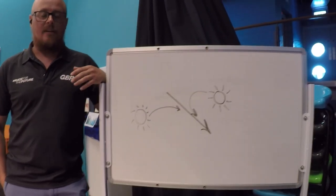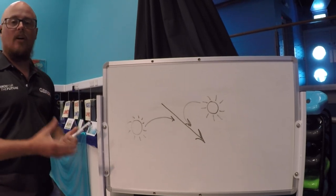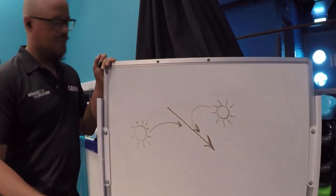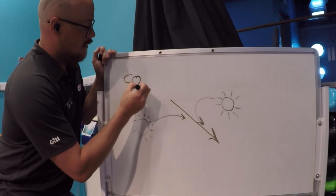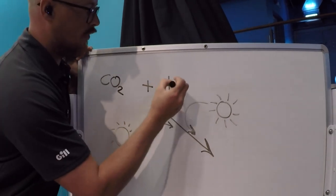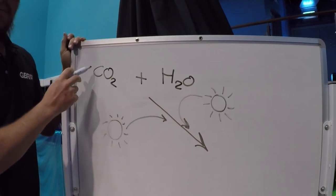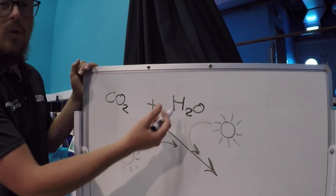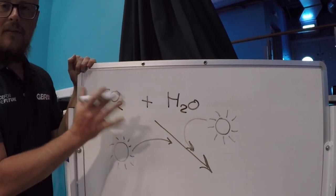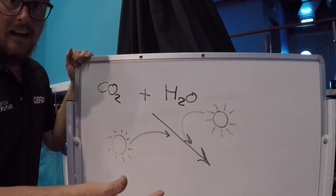Photosynthesis is a reasonably complicated chemical reaction, so it has inputs and outputs. This all takes place inside either plants or photosynthetic organisms. We have two things that go in. First of all, we have carbon dioxide — CO₂: one carbon molecule, two oxygens. We also have water — H₂O: two hydrogens and one oxygen. When these two meet in the cell in the presence of light, a reaction takes place. This reaction is, in essence, photosynthesis. The two outputs then come out, and these are the really interesting bits.